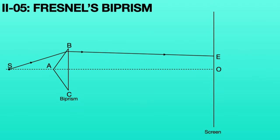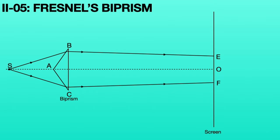Similarly, the other light ray coming from S will be incident on the biprism edge at C. After incidence, the light ray refracts into the biprism, emerges out, and falls at point F on the screen. The light rays coming from S are incident in all directions of the biprism. Another light ray coming from S will directly incident on the prism along the principal axis and splits into two rays in the biprism at point A.